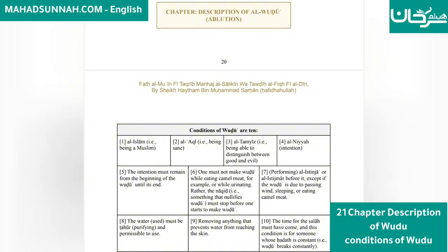Condition 7: Performing al-Istinja or istijmah before Wudu, except if the Wudu is due to passing wind, sleeping, or eating camel meat.